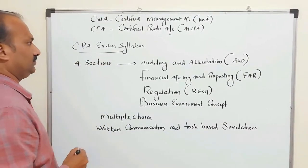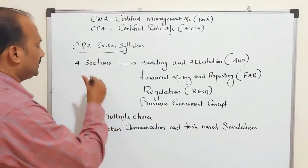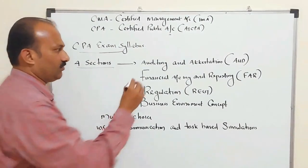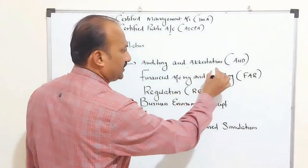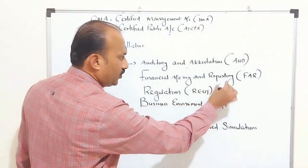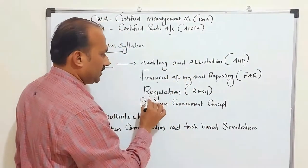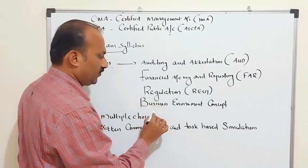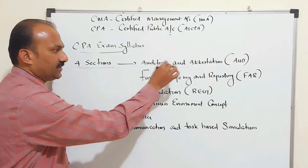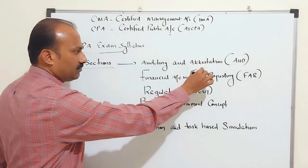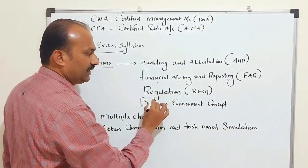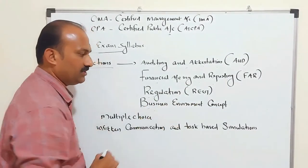The CPA exam syllabus includes four sections: Section 1 — Auditing and Attestation; Section 2 — Financial Accounting and Reporting; Section 3 — Regulation; and Section 4 — Business Environment Concepts.